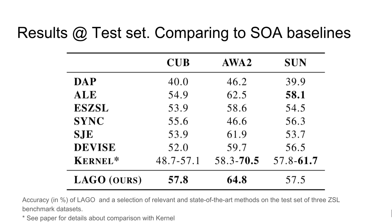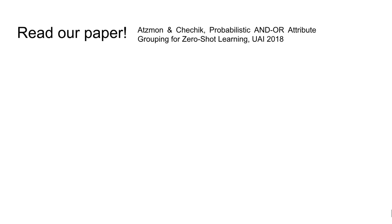LAGO outperforms previous baselines on CUB and AWA2 by a significant margin. On SUN, LAGO loses by a small margin.